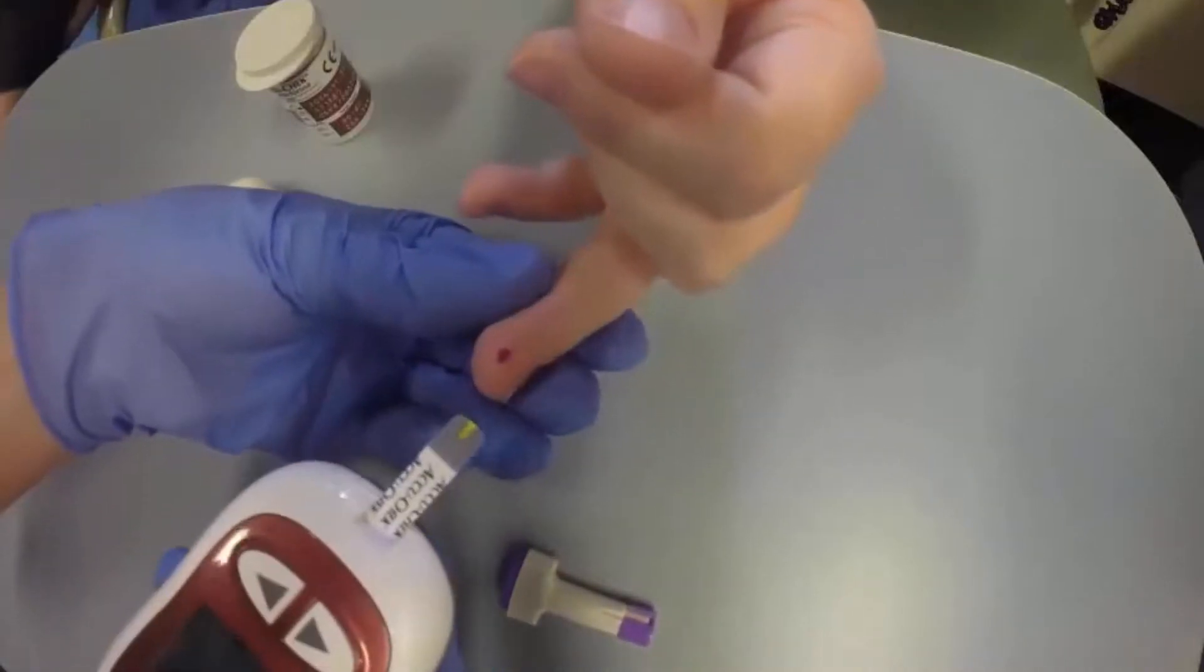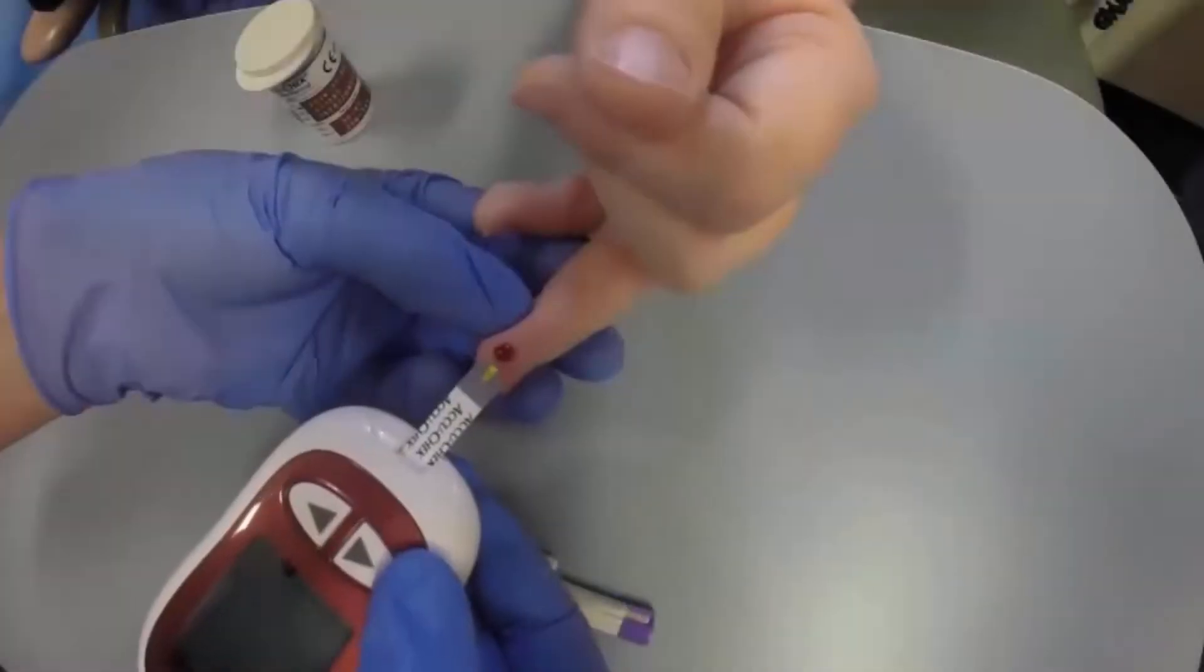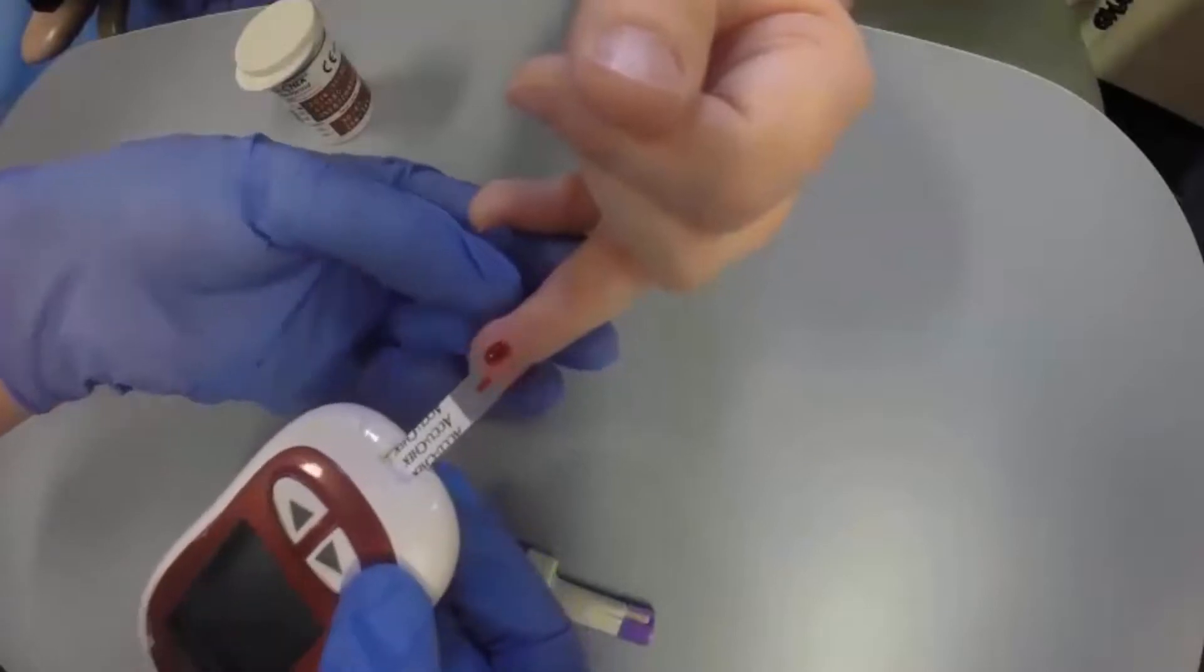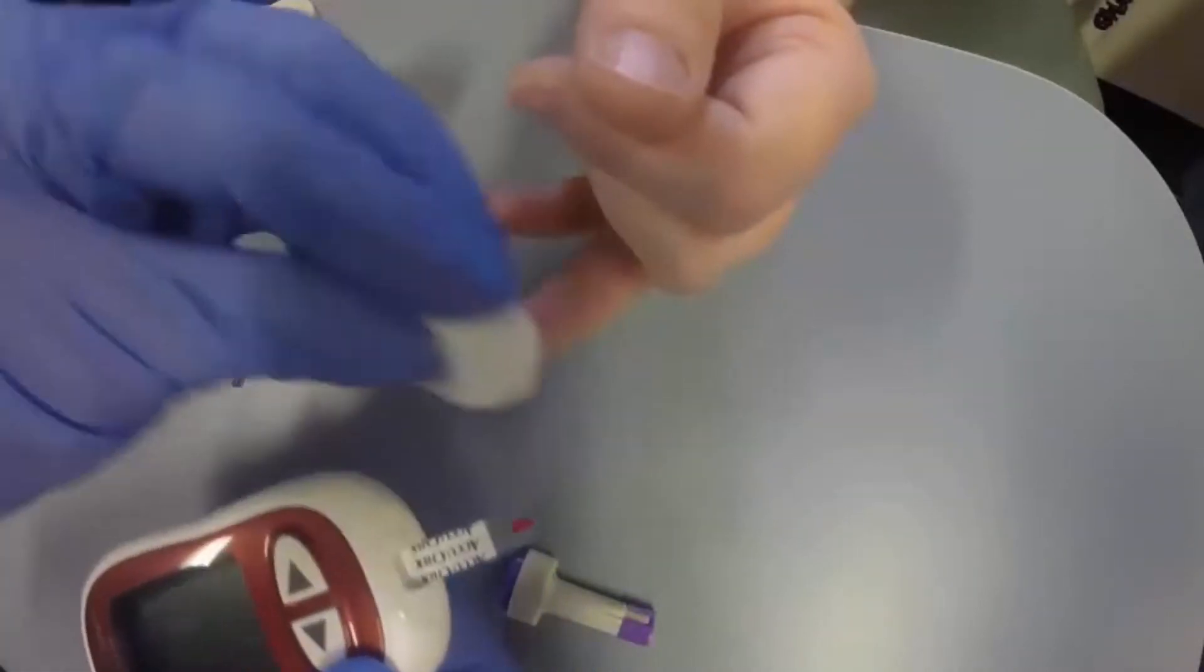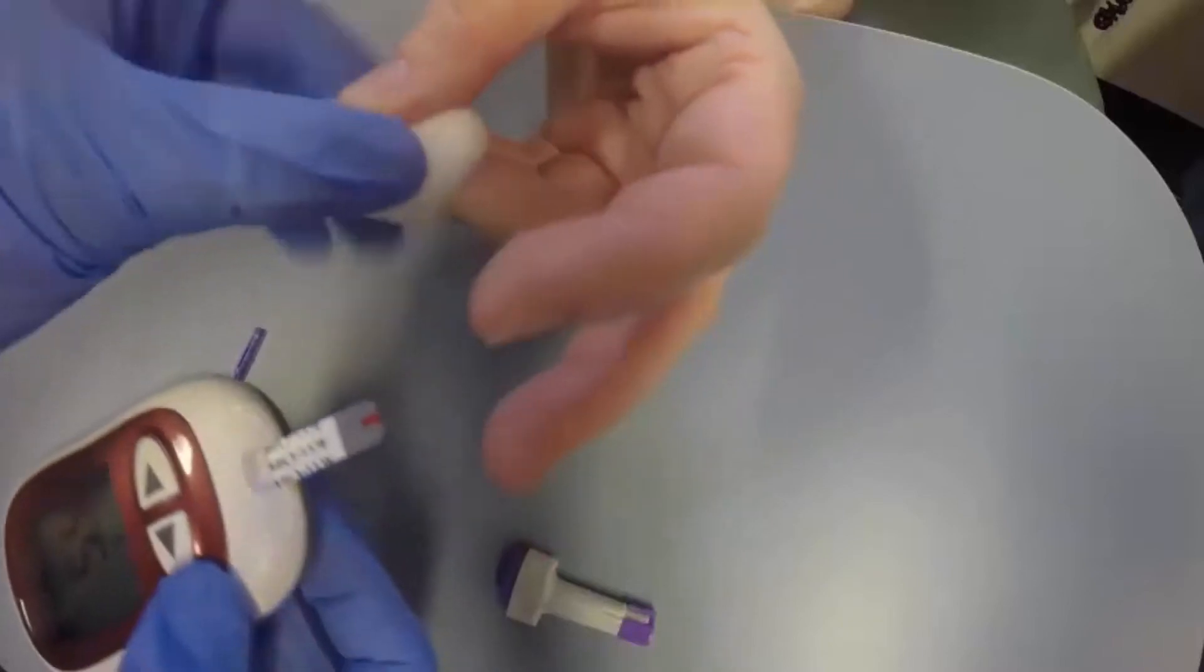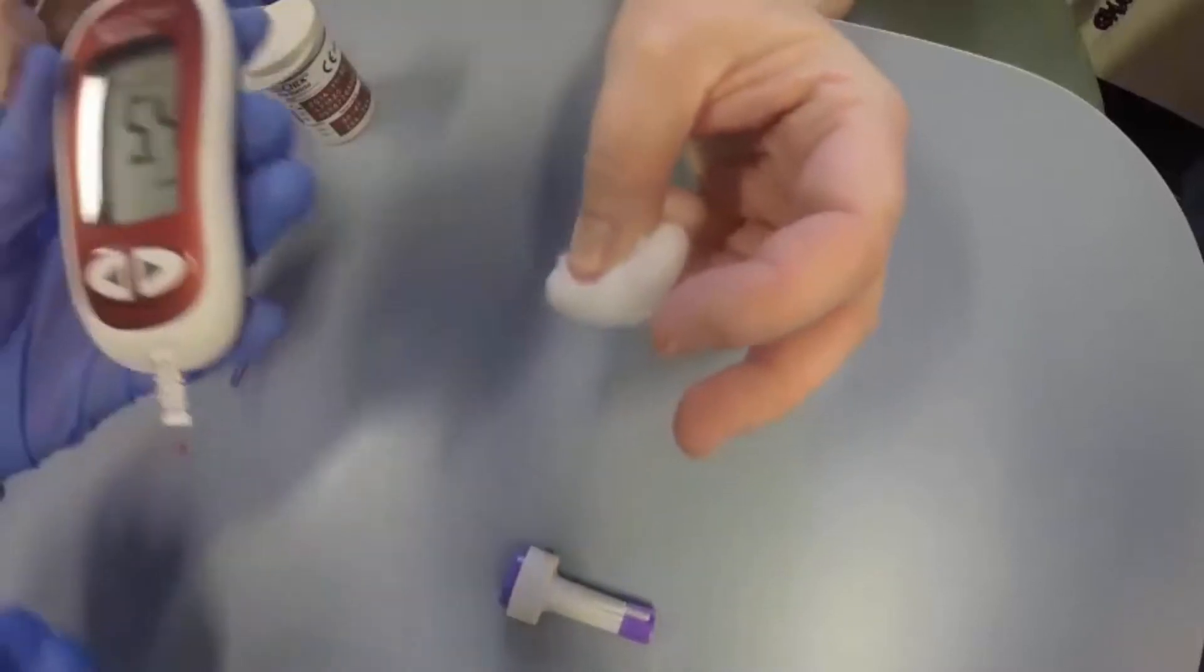Click your machine, place the end of the regent strip, and it will draw a sample into the machine. Apply pressure and give your patient the cotton ball.